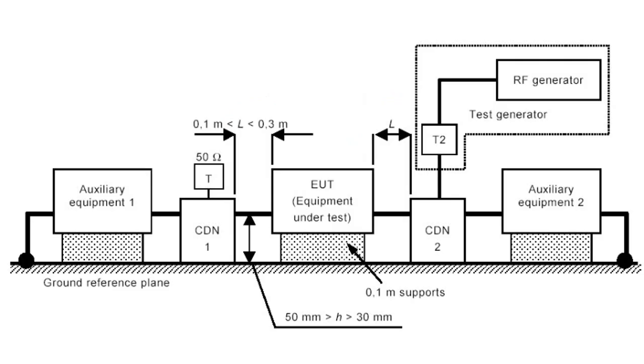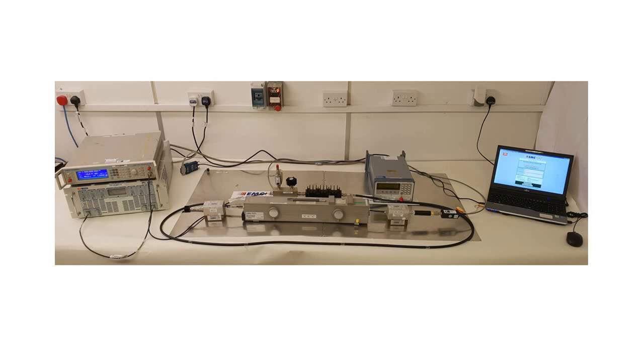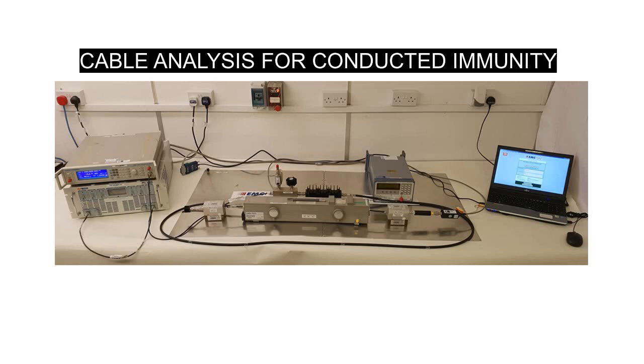Conducted immunity: at frequencies up to the point at which the EUT dimensions approach a quarter wavelength, the major coupling route into the EUT is via interference injected in common mode on the connected cables. Analyzing cables as a source is therefore an important method for checking RF susceptibility.